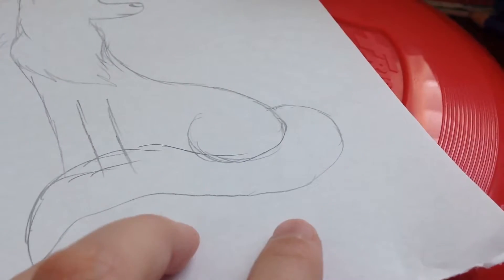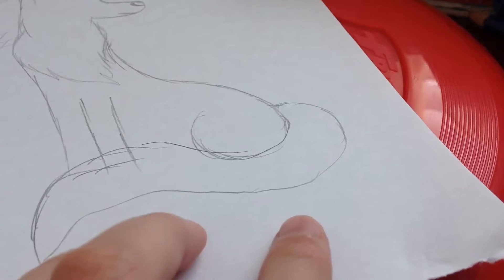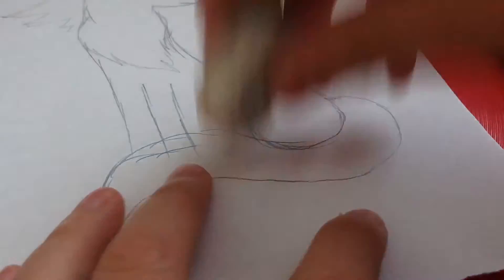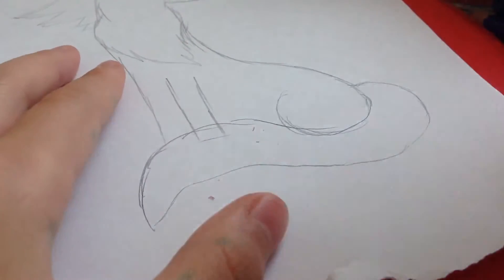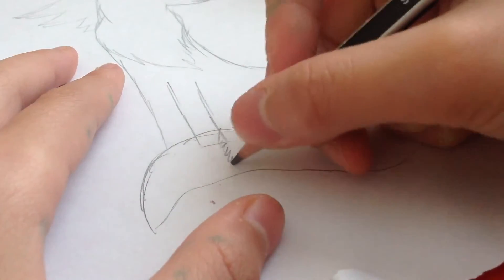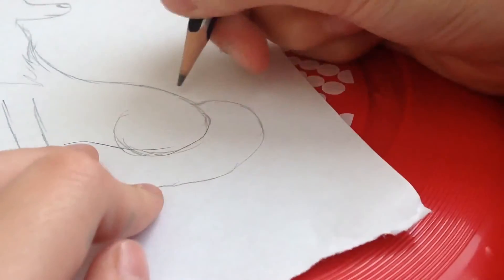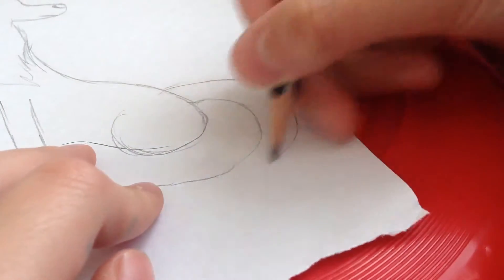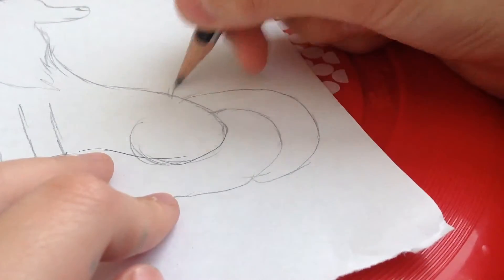So, this part, I will probably erase this part. Add the stripes here. Another one. I'm just going to draw three.